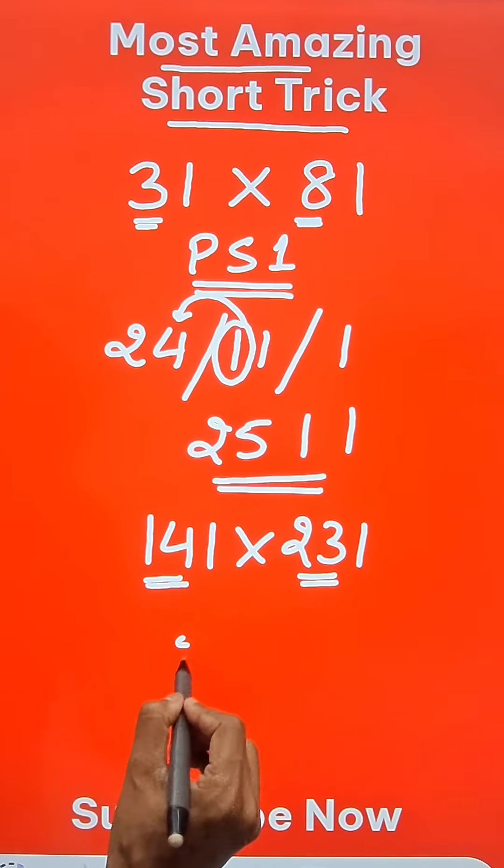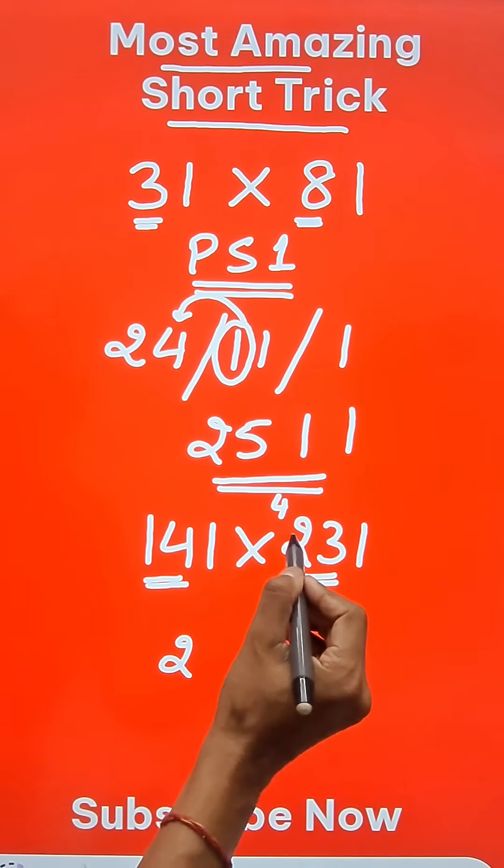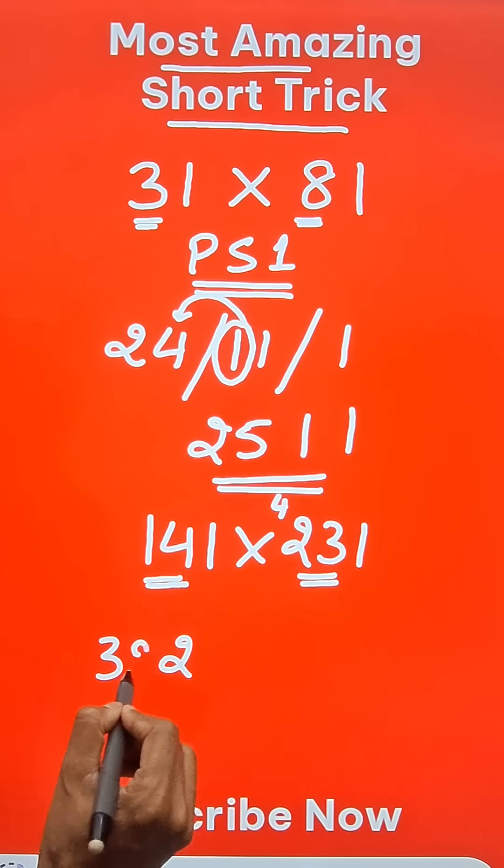14 times 3 is 42, so we write it 2. 4 carry means 14. 2 times 28 plus 4 is 32, so 3 and 22.